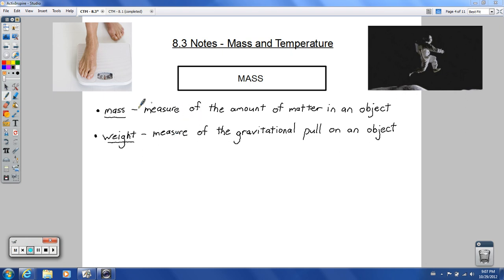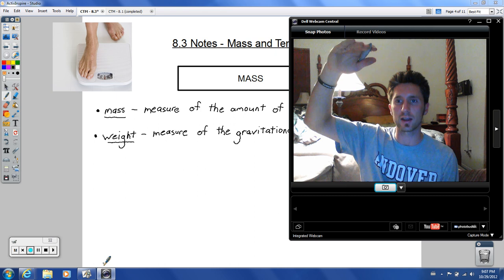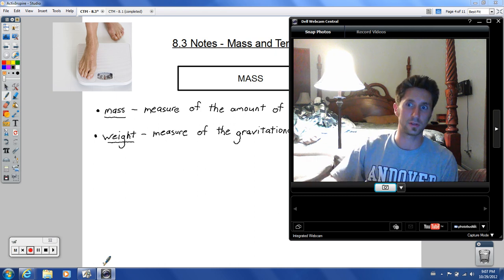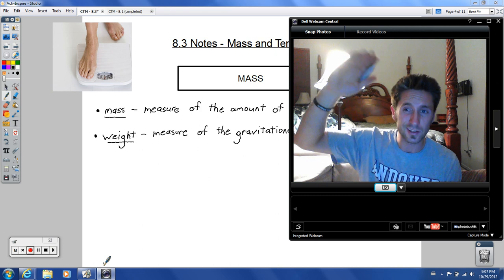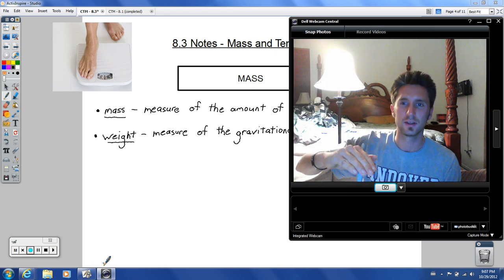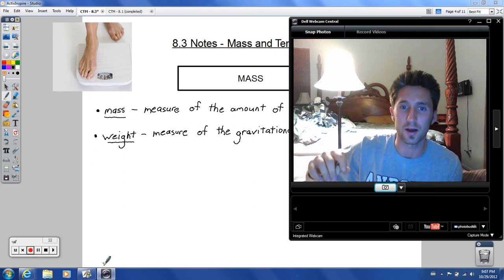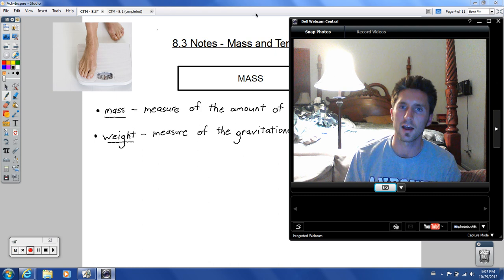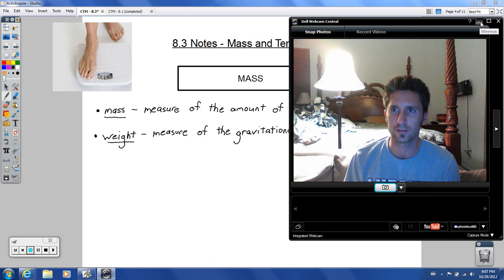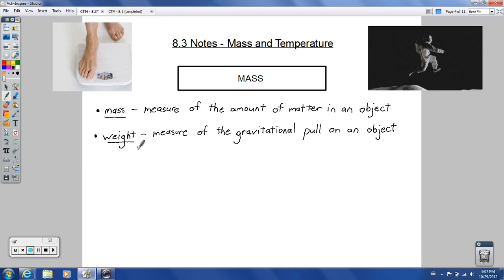You're actually going to weigh a little less on the top of Mount Everest than you would down at Badwater Basin in Death Valley, negative 282 feet below sea level, because the gravitational pull is stronger the closer you get to the Earth. But we're not going to worry about that for the sake of this. When we're talking about mass, we are going to assume that these things are essentially the same, as long as you don't get too far away from the center of the Earth.